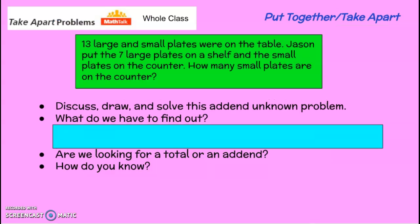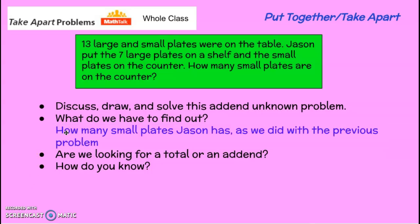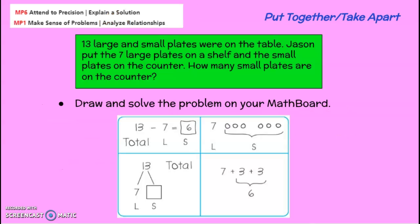Here's a different one. Thirteen large and small plates were on the table. Jason put seven large plates on a shelf and the small plates on the counter. How many small plates are on the counter? So what do we have to find out? How many small plates Jason has — just like the previous problem. Are we looking for a total or an addend? If thirteen is the total, then we know we're looking for one of the addends. Pause and come back to look at the drawing, equation, and answer. Make sure everything is labeled.